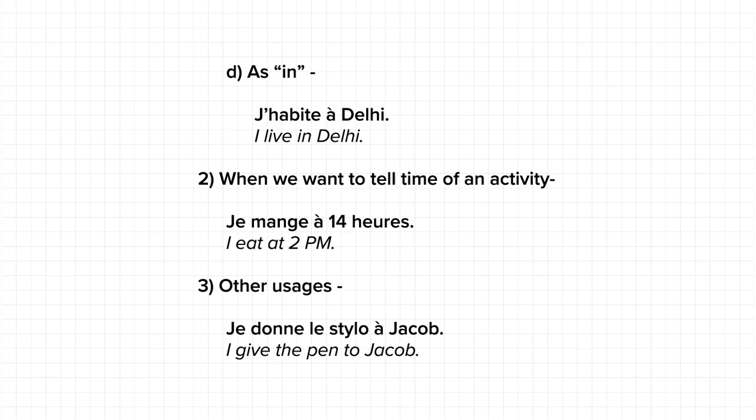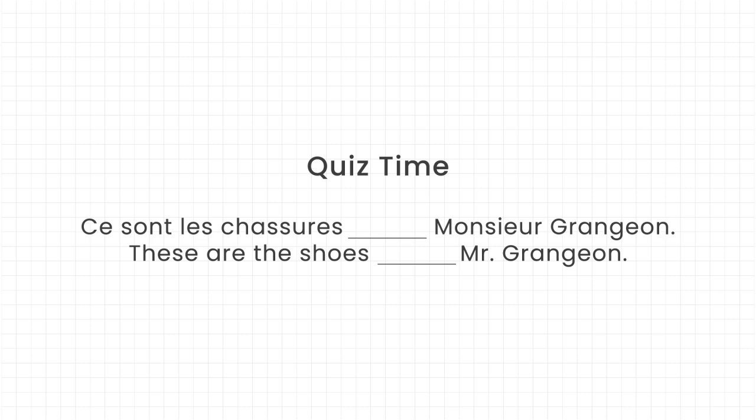I hope that by now you have understood the prepositions 'de' and 'à' very well. These prepositions will be used to make contracted articles — in the next video, we'll see how. But before that, let's take a very small quiz to see how much you have learned from this video. Fill in the blank with the correct preposition and answer in the comment section below.